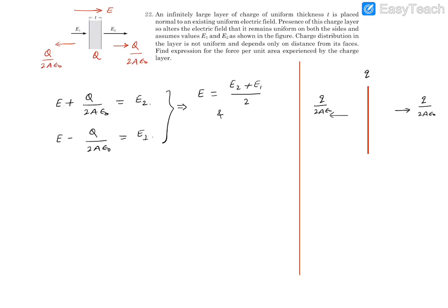To find Q, subtract the two equations. The E terms cancel and we get Q/(Aε₀) = E2 − E1, which gives Q = Aε₀(E2 − E1). So we have found both the external uniform field E and the total charge Q of this layer.